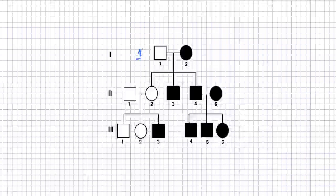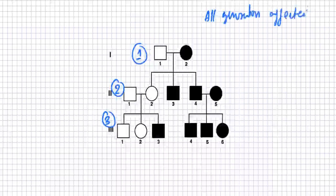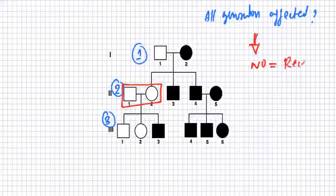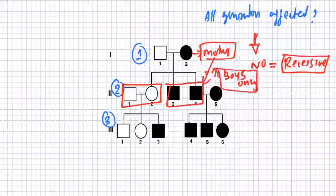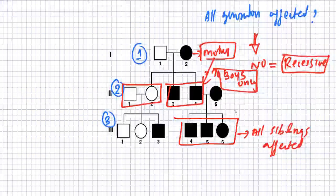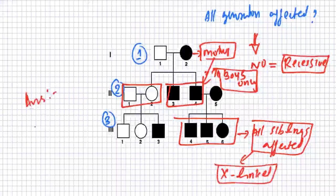Example three: first, second, and third generations. Not all generations are affected, so it is a recessive character. The mother is affected and she is carrying it to two of her boys — only males are affected, with females escaping. One of the boys married an affected female and all siblings in that relationship are affected. Mother to boys only — that is an indication of an X-linked disease. The answer is X-linked recessive (XLR).